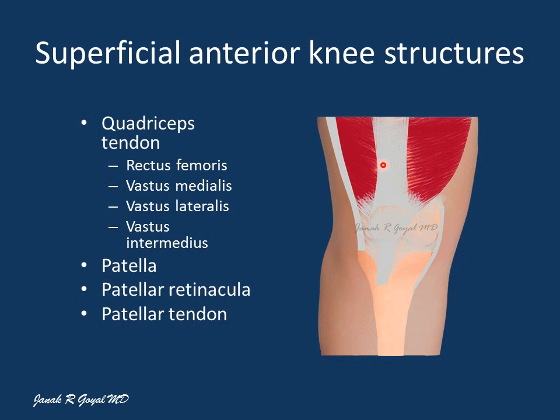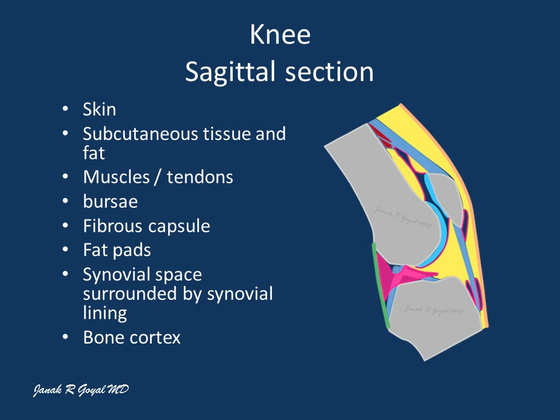Here is a drawing of the sagittal section of the right knee through the intercondylar fossa. It shows the structures which are commonly seen on sonographic examination of the knee. The structures seen above the patella in the suprapatellar region are: skin, subcutaneous tissue, patellar tendon, patella, suprapatellar fat pad, suprapatellar recess, pre-femoral fat pad, and the femoral cortex.